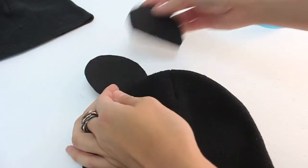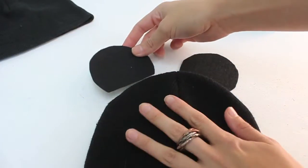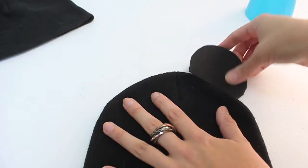So now that you've created a template for your ears using the felt, you want to go ahead and place them on your beanie. That's how they're going to look.